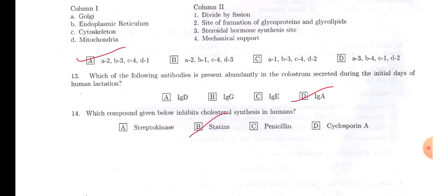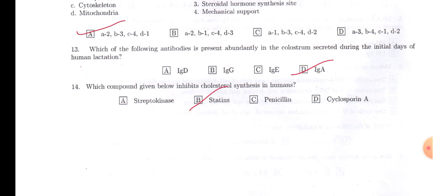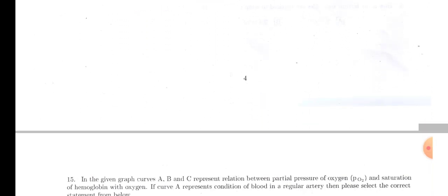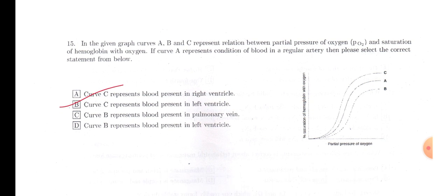Which of the following antibodies is present abundantly in colostrum secreted during the initial days of human lactation? IgA will be the answer. Very easy question. Which compound given below inhibits cholesterol synthesis in humans? Again easy question: Monascus purpureus produces lovastatin, which reduces cholesterol in blood.